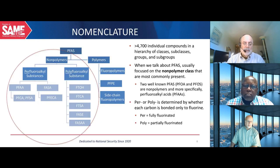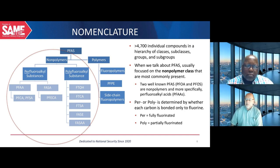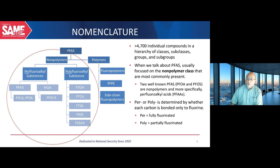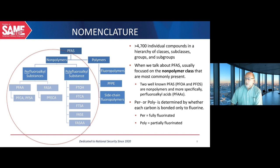To start, PFAS are a group of chemicals with over 4,700 individual compounds. There are polymers and non-polymers — polymers generally aren't a concern to human health and the environment. However, non-polymers are used in the manufacture of polymers, and the most well-known of these are PFOA and PFOS. Within the non-polymer group are perfluoroalkyl substances, and polyfluoroalkyl substances. 'Per' means the group is fully fluorinated, where 'poly' means the compound is partially fluorinated — and this makes a big difference in the behavior of these two groups.